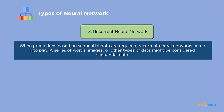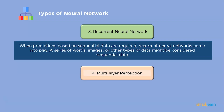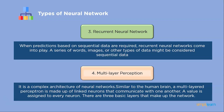Recurrent neural networks come into play when predictions based on sequential data are required — such as a series of words, images, or other sequential data types. Multi-layer perceptron is a complex architecture modeled like the human brain, made up of linked neurons communicating with one another, with a value assigned to every neuron. Multi-layer perceptrons have numerous hidden layers and activation mechanisms, and gradient descent is used to update the weights during the supervised learning process.